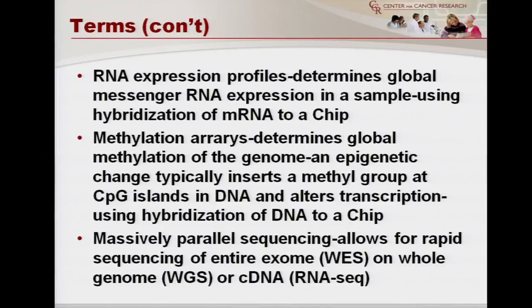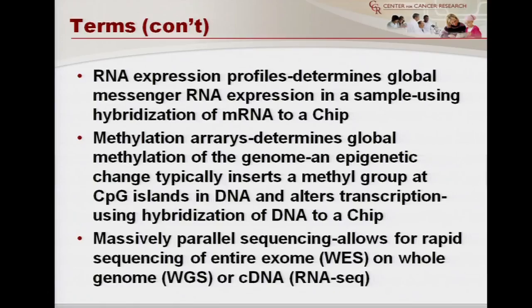A slightly newer application of chip arrays are methylation arrays. So far we've talked about looking at DNA or RNA and changes in base pairs and coding sequences. Methylation arrays determine global methylation of the genome — that's an epigenetic change in that it doesn't change the base pairs. What it typically does is insert methyl groups at what are referred to as CpG islands — cytosine-guanine — and that methylation alters DNA, typically silencing it. So these are changes we refer to as epigenetic changes that alter transcription, and they use hybridization of DNA to a chip.